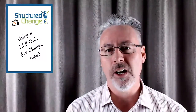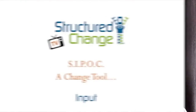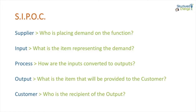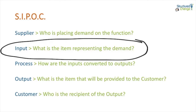So without further ado, let's take a look at the I for input. The next letter we're considering in our SIPOC journey is I for input. From the input perspective, we're asking: what is the actual item representing the demand? Is the supplier putting a request on us? Did they hand us a document? Is it a transaction in a system, or is it a requisition? It's important to capture these different types of inputs as we go through this.